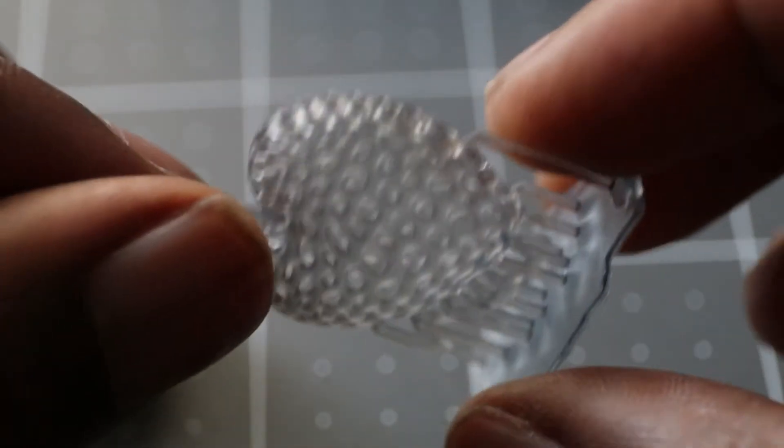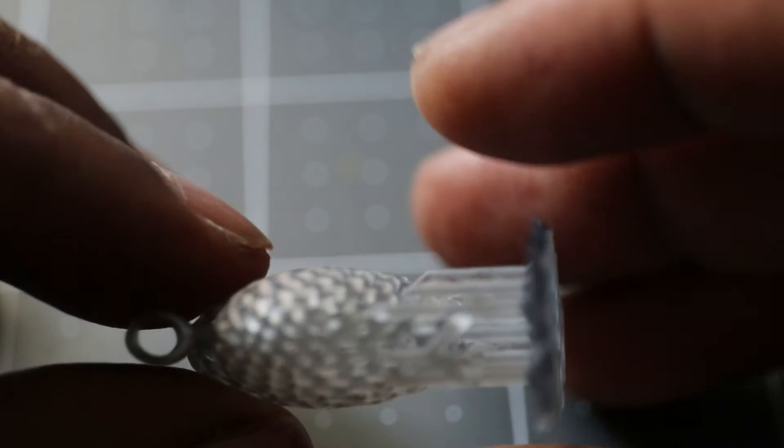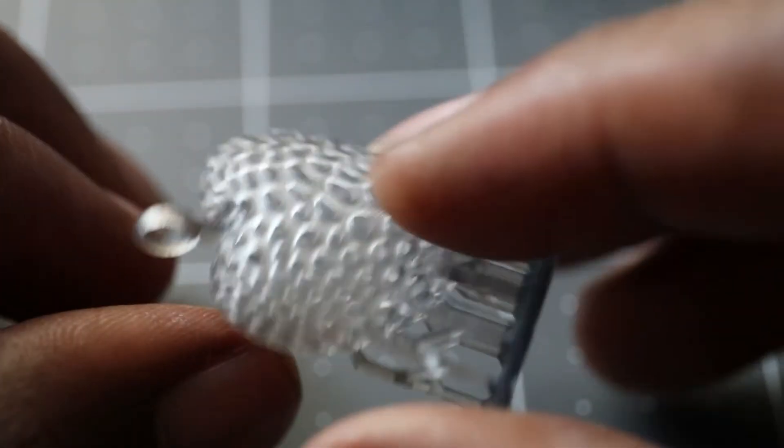Here's the heart pendant. It looks just like it did in the file. I think it came out perfectly. Can't see any imperfections whatsoever with this print.